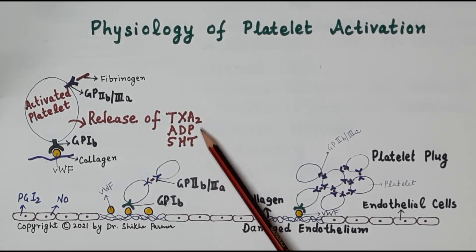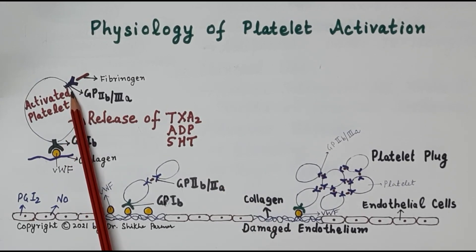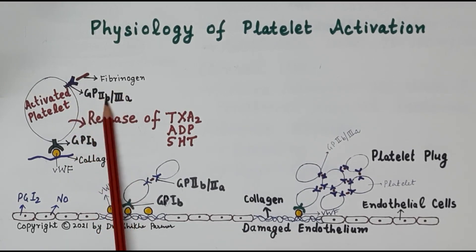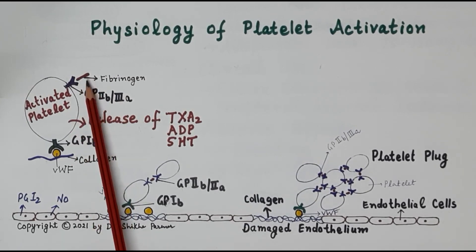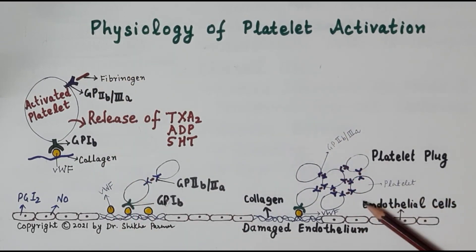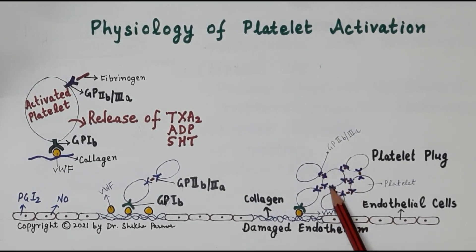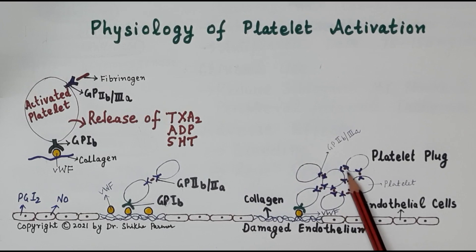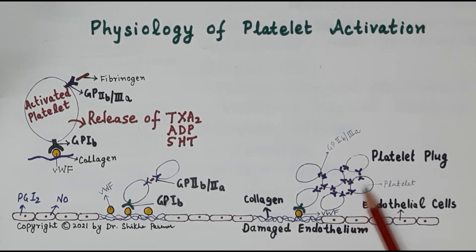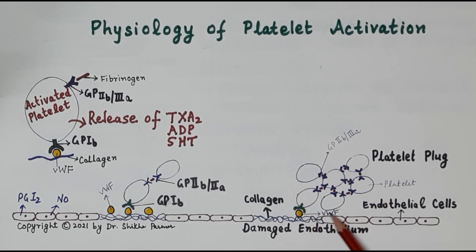These mediators activate GP2b3a receptors, which are the fibrinogen receptors. Once activated, these receptors bind to fibrinogen, which further binds to adjacent platelets. As shown in the diagram, the activated platelet's GP2b3a receptor binds fibrinogen, fibrinogen binds another platelet, and so on, forming a platelet plug through cross-linking, with fibrinogen functioning as a glue. This platelet plug is essential for clot — or thrombus — formation.